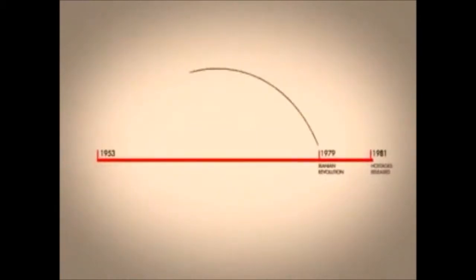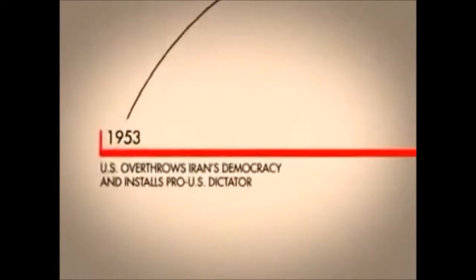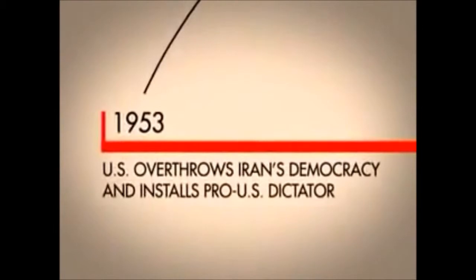But to really understand, we have to go back to 1953, which is where the story begins for most Iranians. This was the year that the U.S. overthrew Iran's democracy and installed the Shah, a pro-U.S. dictator.